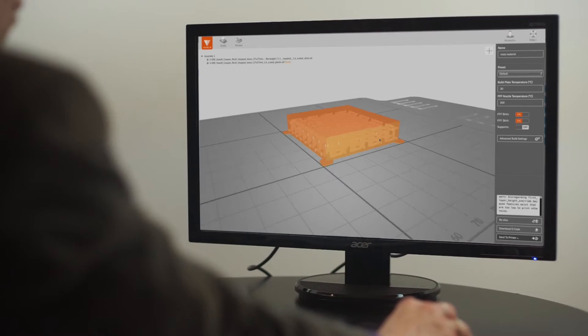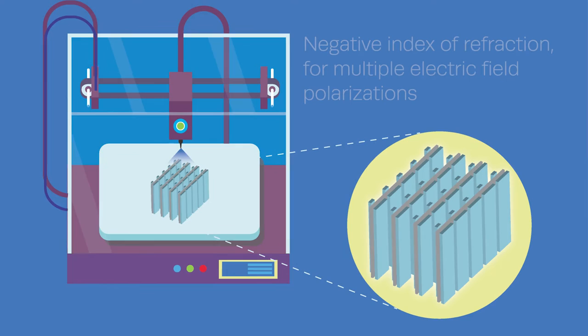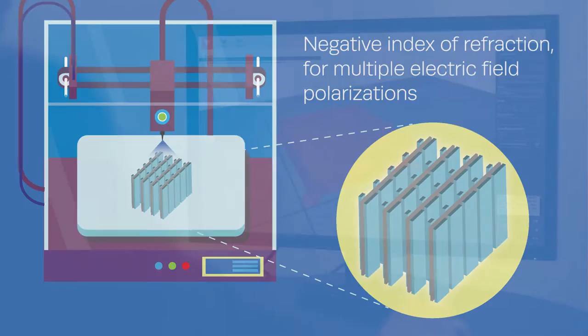Unlike the original makeup that only works when the electrical field is aligned in a particular direction, the modified right-angle structures allow the metamaterial to keep its exceptional properties, such as negative index of refraction, for multiple electric field polarizations.